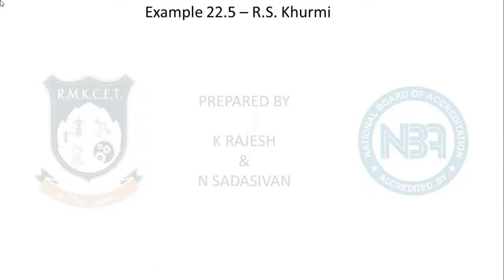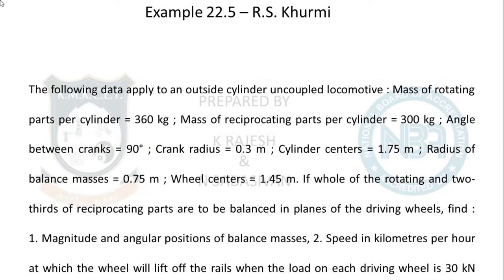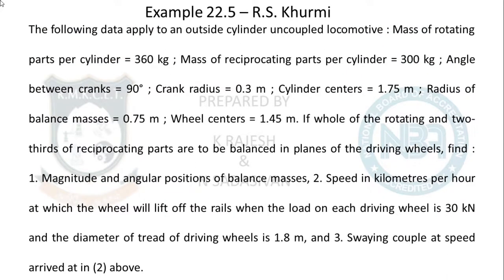This is Example 22.5 in the Kumi textbook. Read the question: the following data apply to an outside cylinder uncoupled locomotive. Note that the last problem was an inside cylinder type — this is an outside cylinder uncoupled locomotive.